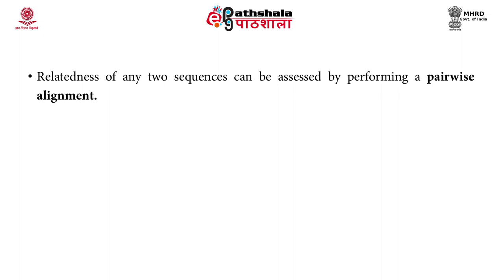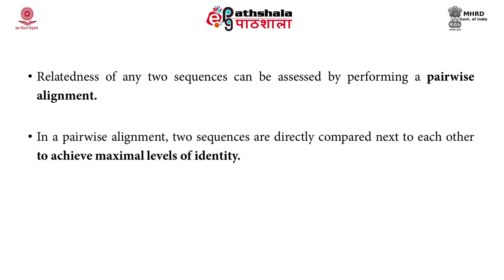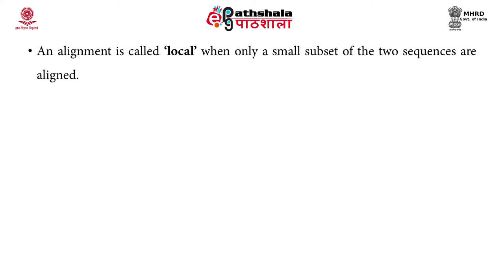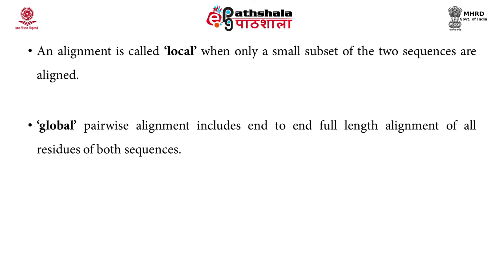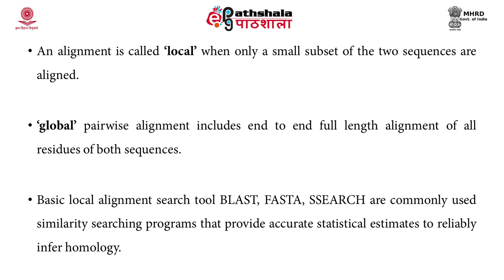Relatedness of any two sequences can be assessed by performing a pairwise alignment. In a pairwise alignment, two sequences are directly compared next to each other to achieve maximum level of identity. An alignment is local when only a small subset of two sequences is aligned, whereas in a global pairwise alignment, an end-to-end full-length alignment of all residues of both sequences is included. BLAST (Basic Local Alignment Search Tool), FASTA, and SSEARCH are commonly used similarity searching programs that provide accurate statistical estimates to reliably infer homology.